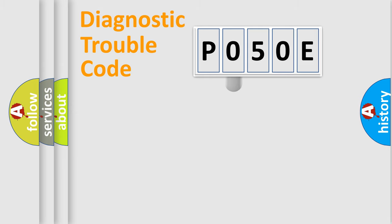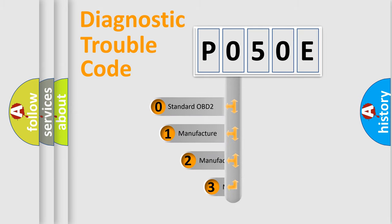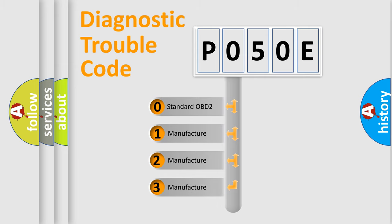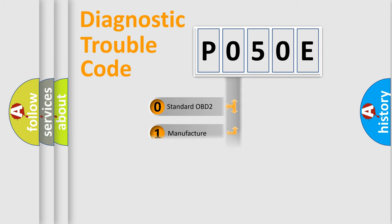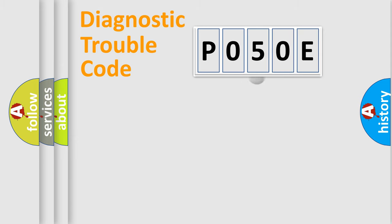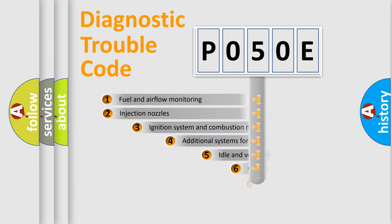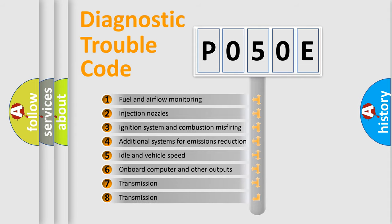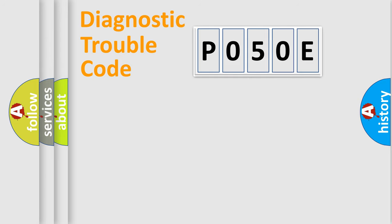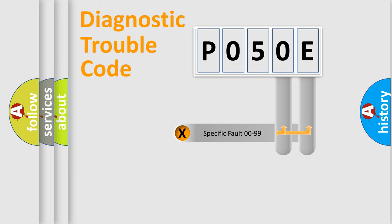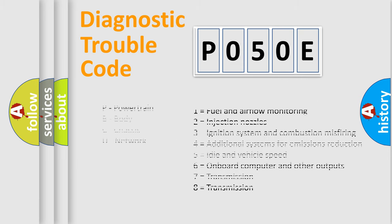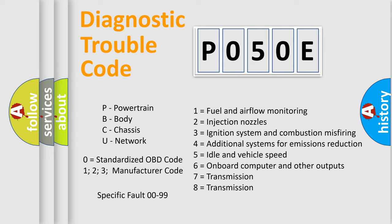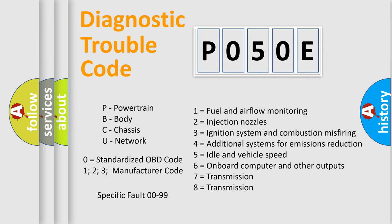This distribution is defined in the first character of the code. If the second character is expressed as zero, it is a standardized error. In the case of numbers 1, 2, or 3, it is a more specific expression of a car-specific error. The third character specifies a subset of errors, and this distribution is valid only for the standardized DTC code. Only the last two characters define the specific fault of the group.